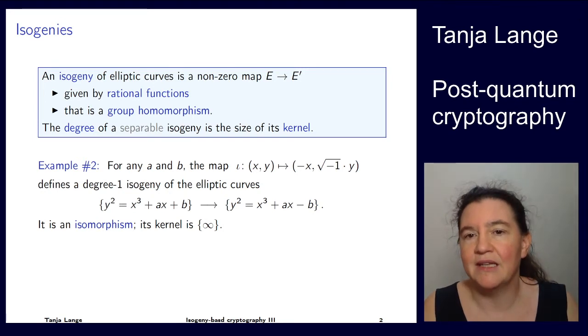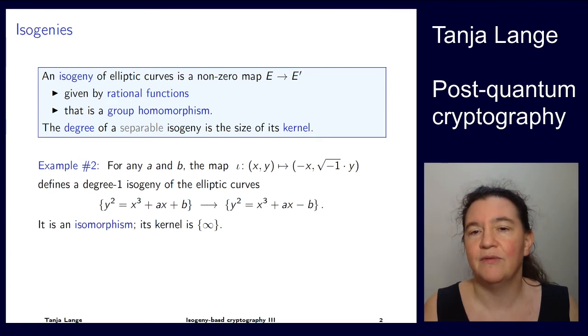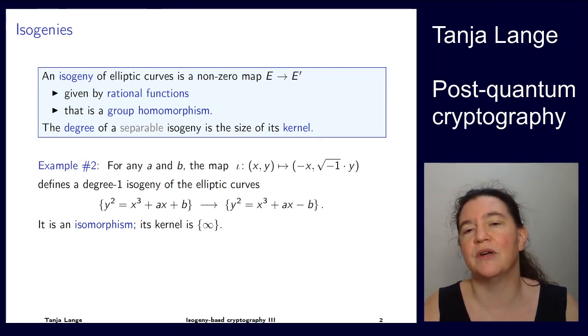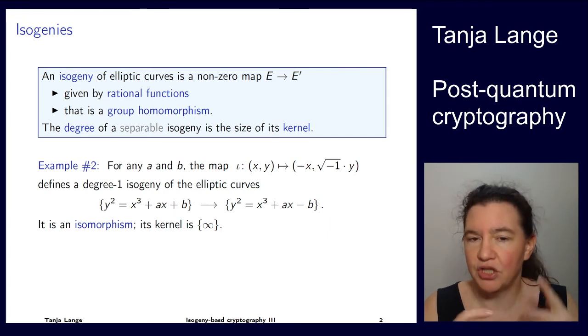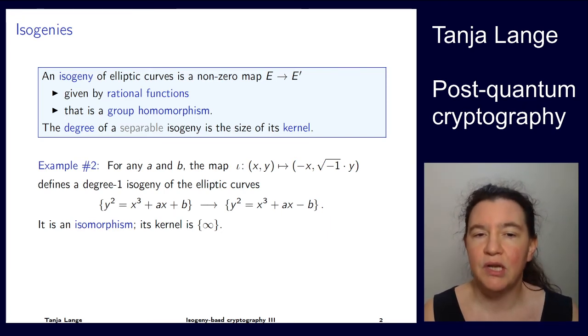Yes, it looks exactly like the maps I described. Minus 1 is the square of this other thing, which is, well, square root of minus 1 is equal to cube root of minus 1. Okay, there is a minus sign. So this is a typical isomorphism, and so the kernel is just one point. So this is a degree-1 isogeny.